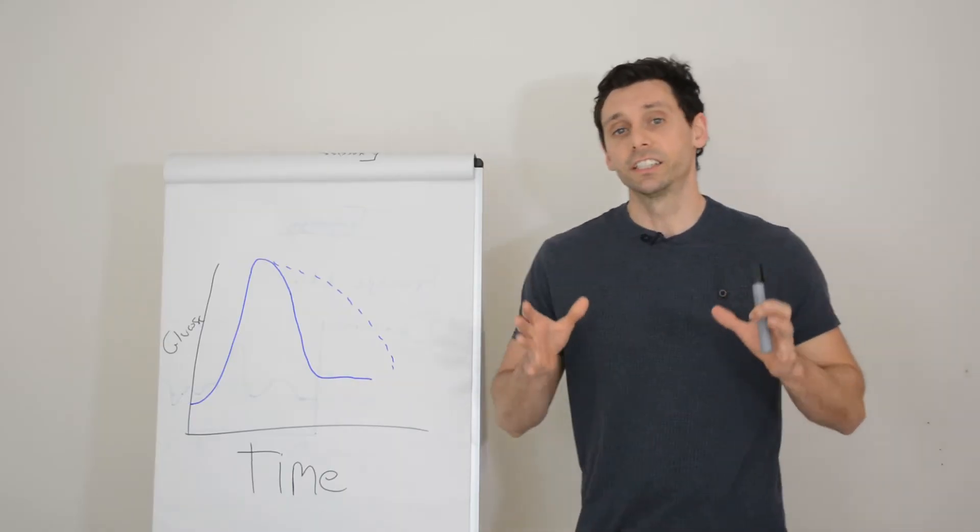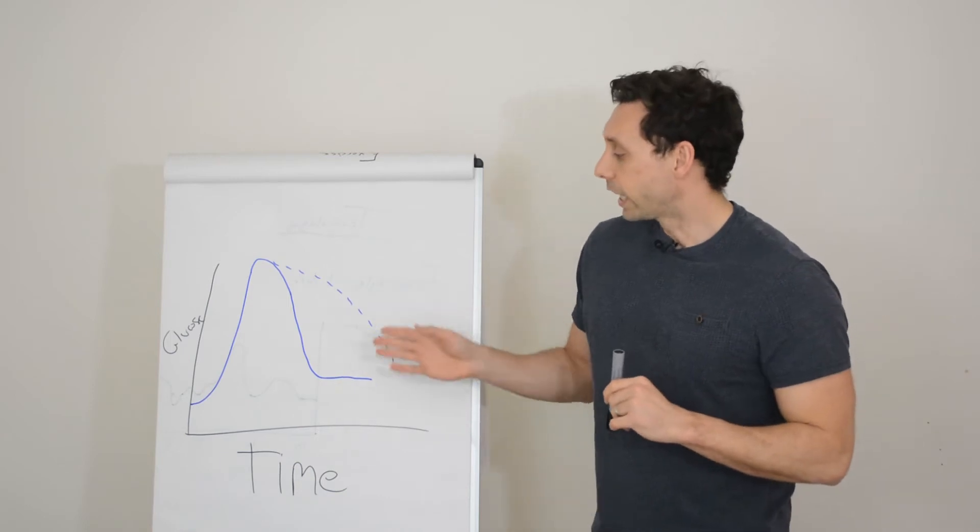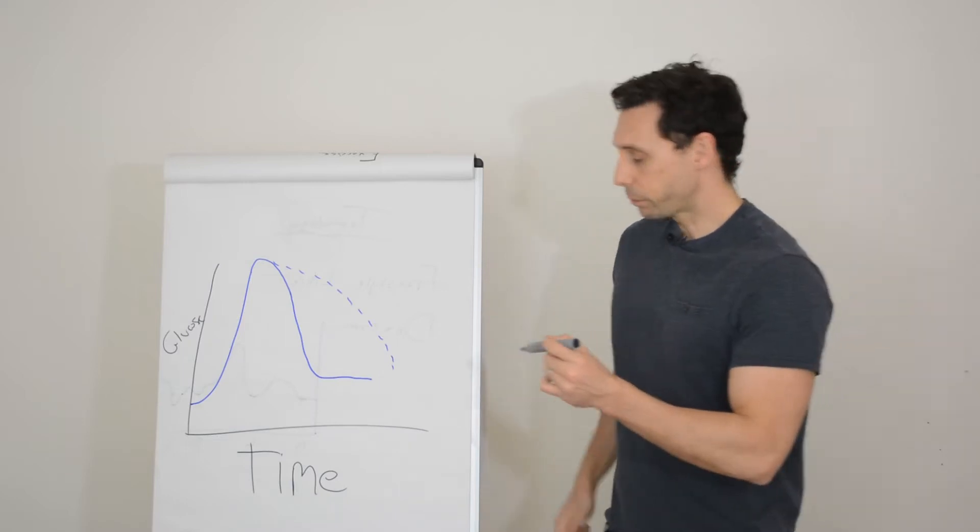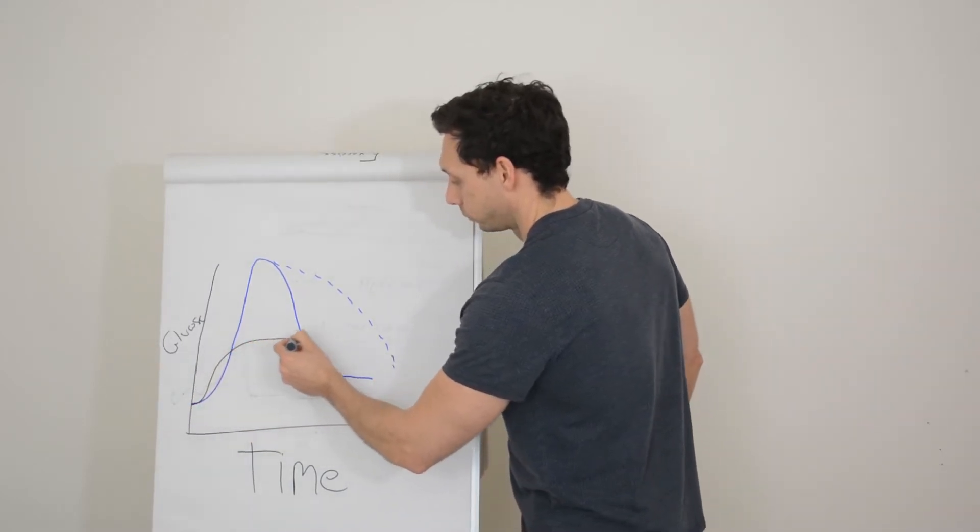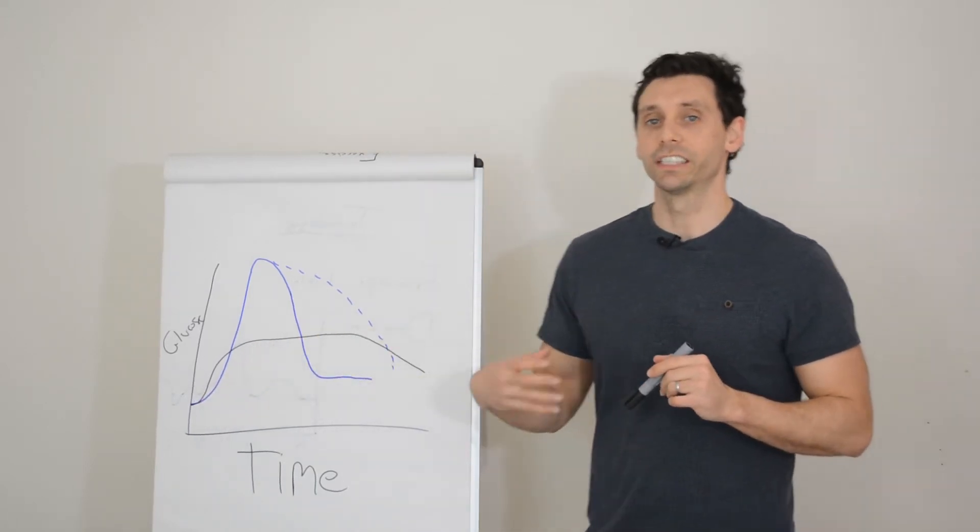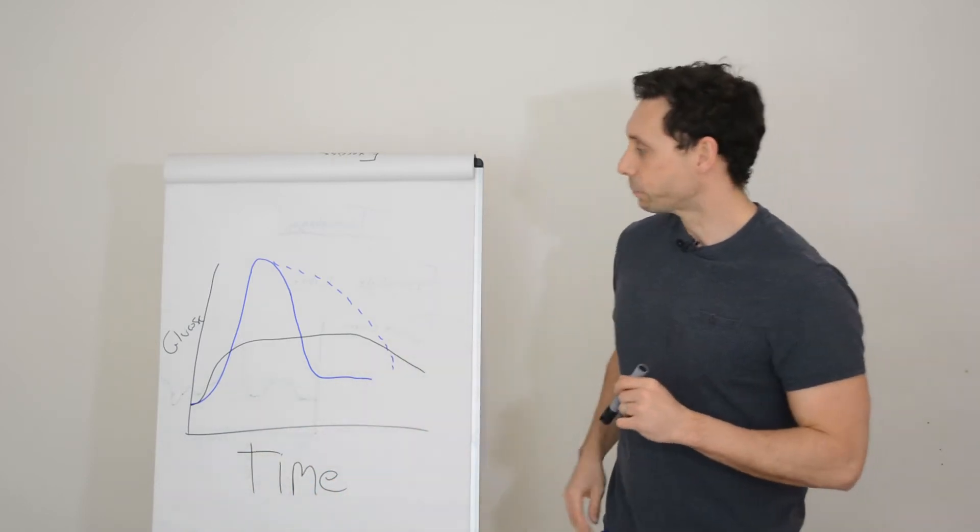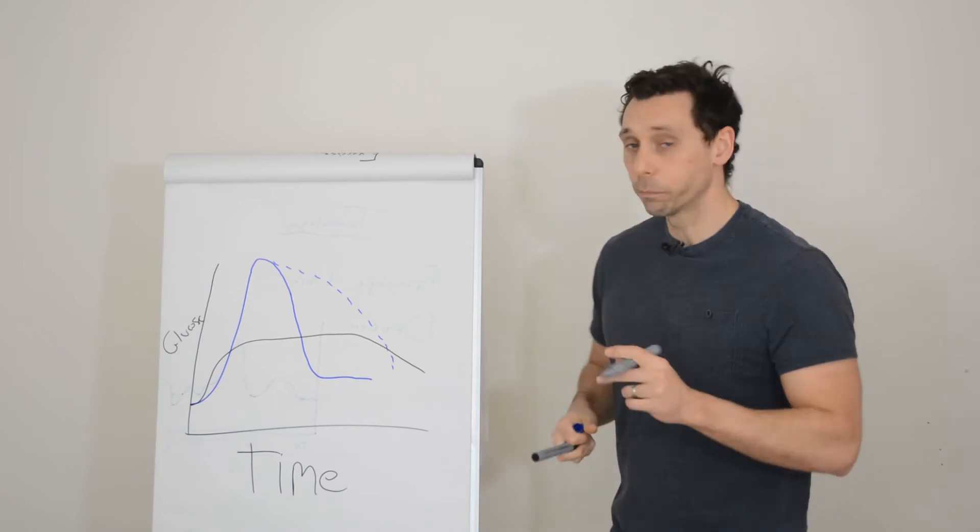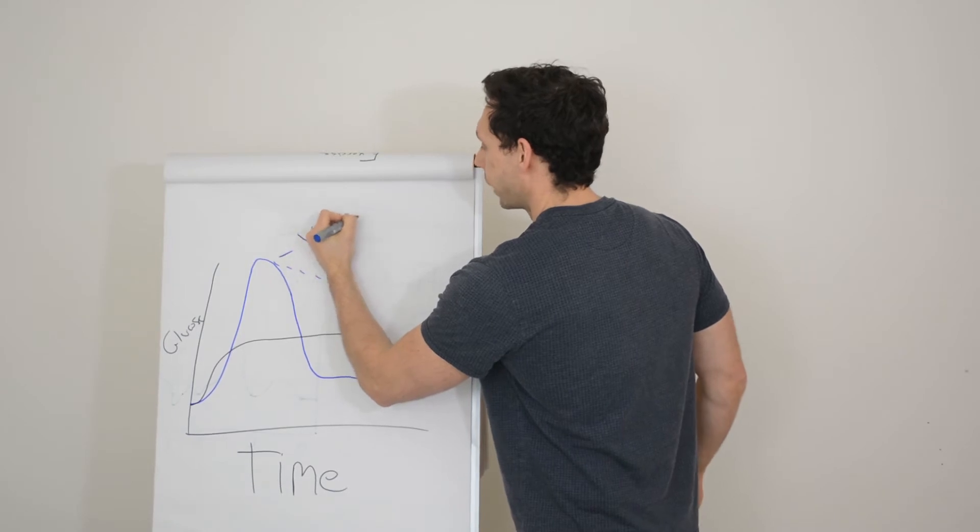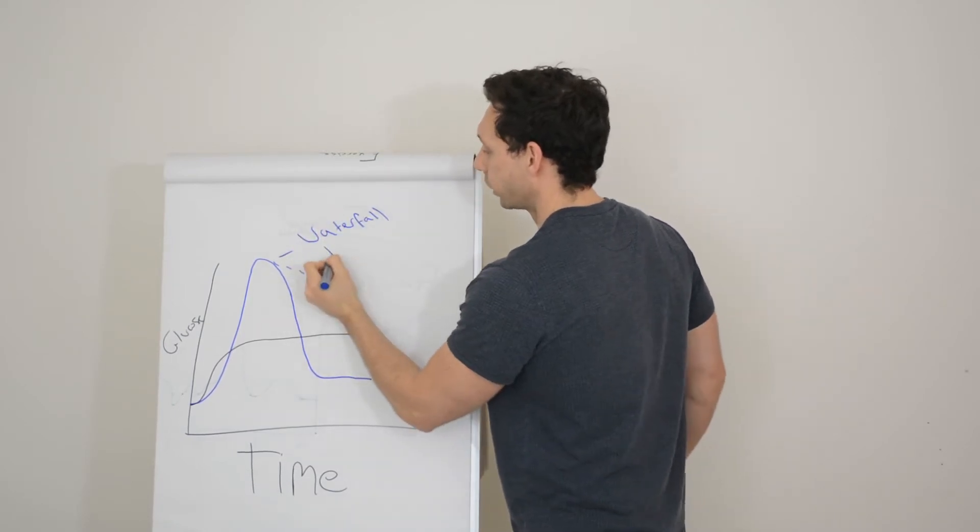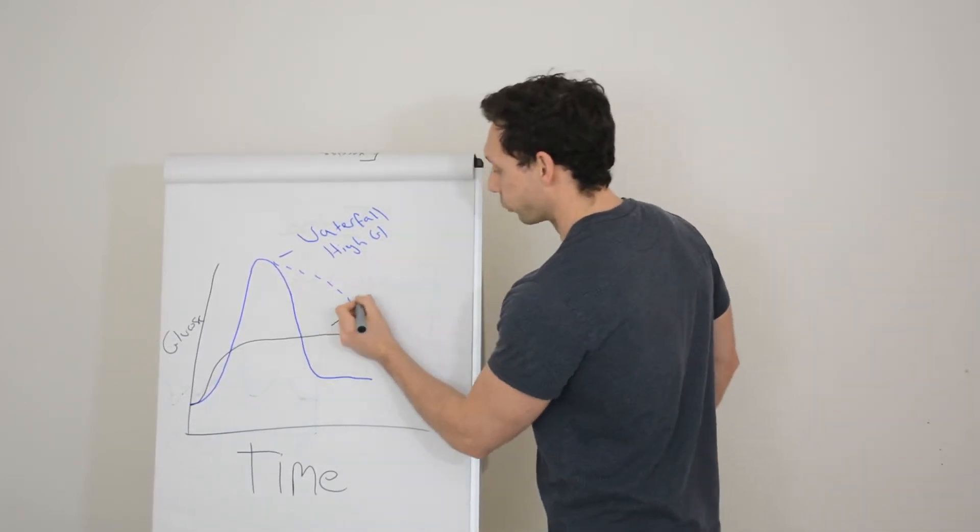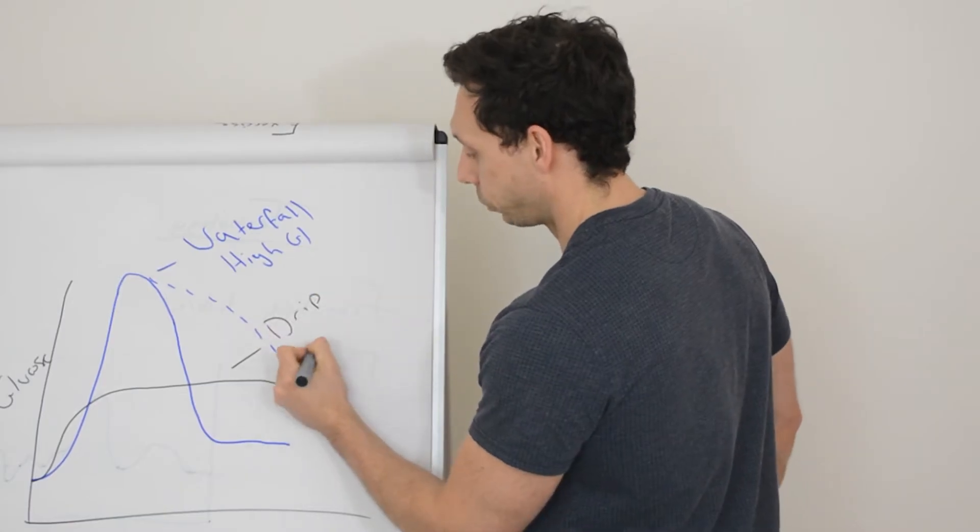However, something that is considered low glycemic index, in other words, you get less carbohydrate or less glucose entering your system at any one time, will look a bit more like this. So as you can see, it's got a delayed absorption because it takes longer for the body to break down those carbohydrates. So really what I compare these two examples to is we can call this almost like the waterfall effect, because you get a big rush of glucose entering your system all at once. So that's your high GI. And then we also have the drip effect, which is your low GI.